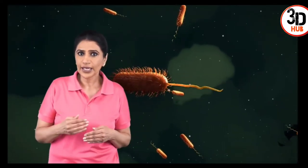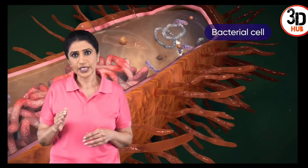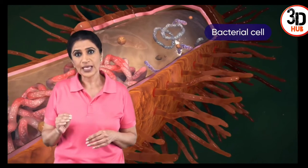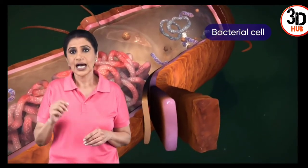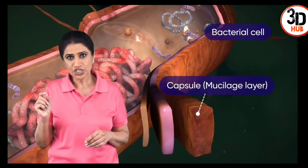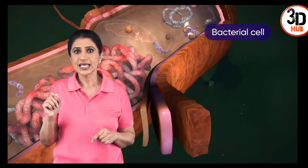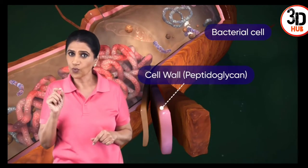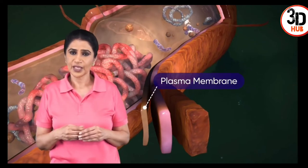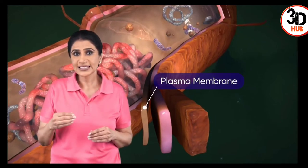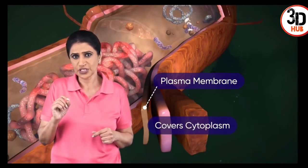An example of a prokaryotic cell is the bacterial cell. Its outermost covering, called the cell envelope, is differentiated into three layers: a capsule or mucilage layer forms its outermost layer, next is the peptidoglycan cell wall, and the innermost layer is the plasma membrane.